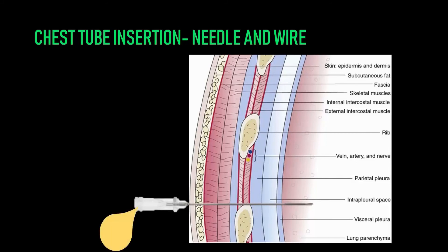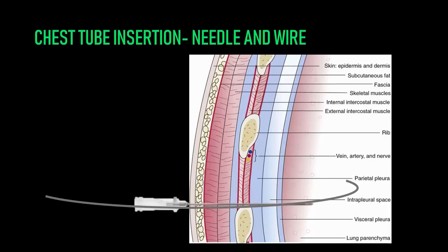Recheck that you have free drainage of pleural fluid. Now carefully stabilize the needle and advance the guide wire into the pleural space — you should not feel any resistance. The wire is likely to hit either a mediastinal structure, the diaphragm, or a piece of lung, at which point you'll feel a bit of resistance and should stop advancing. You can then withdraw the needle, leaving the wire in situ. If you're using a kit with a syringe, such as the Thalquik, make a little nick at the skin site along the wire.